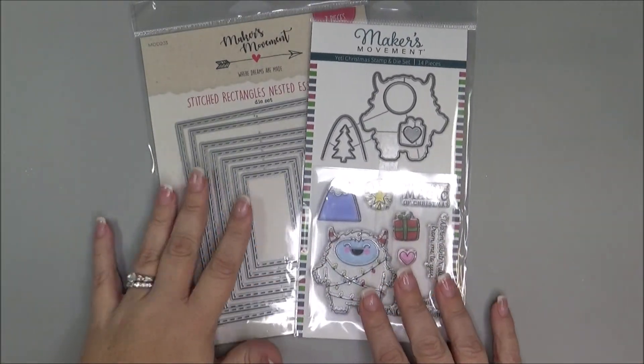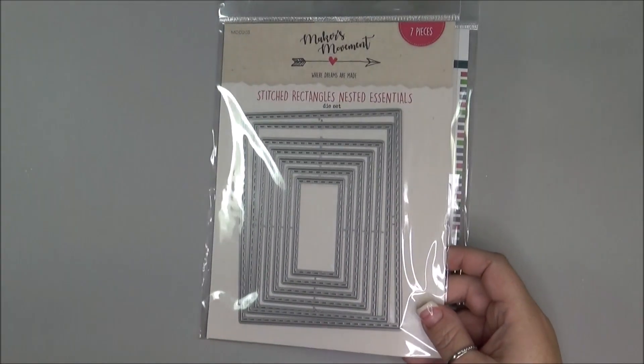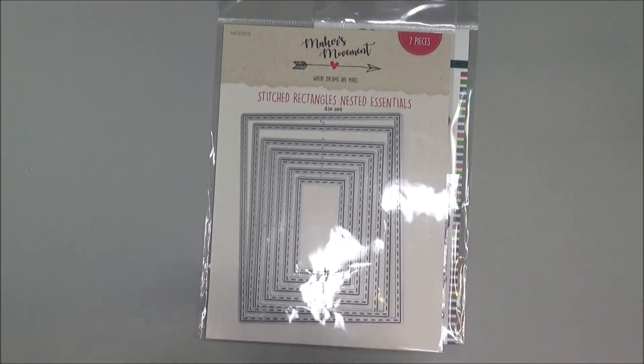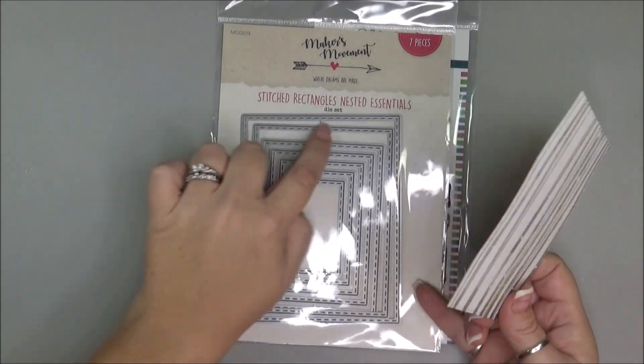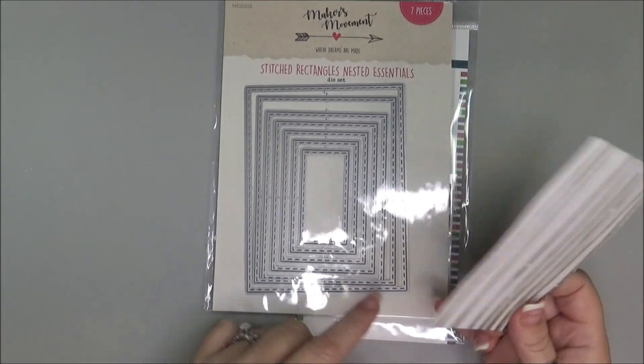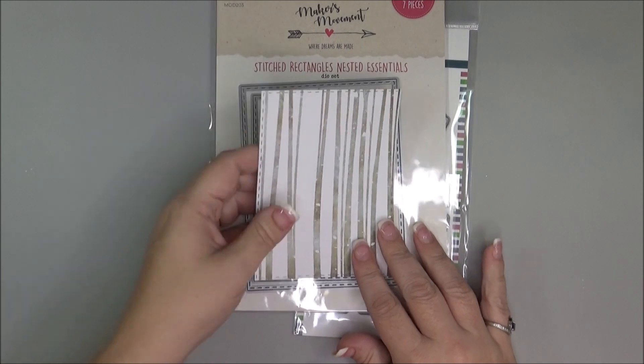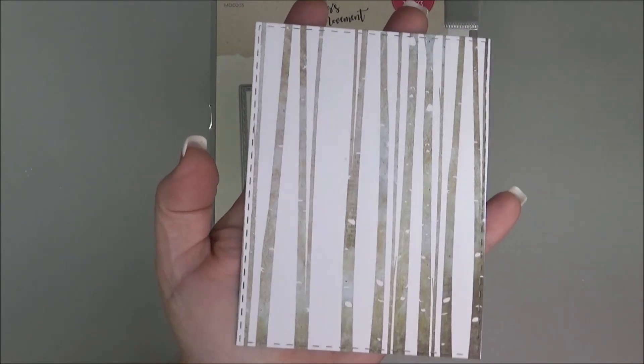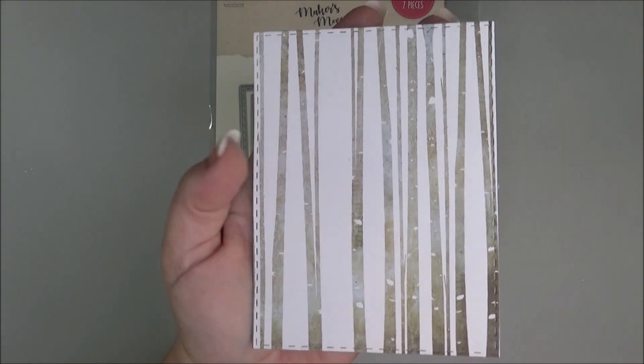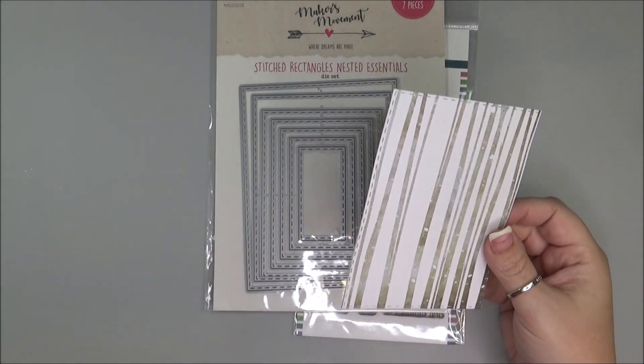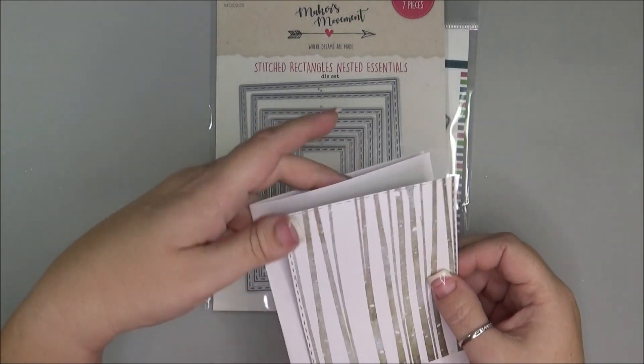And I'm also going to be using some other products. This is their Stitched Rectangle Nested Essentials. And what I did was cut out the second frame, the second biggest frame, you can see there. This is just some paper that I had that looked like trees and some snow falling. So I'm going to use that for my card front.